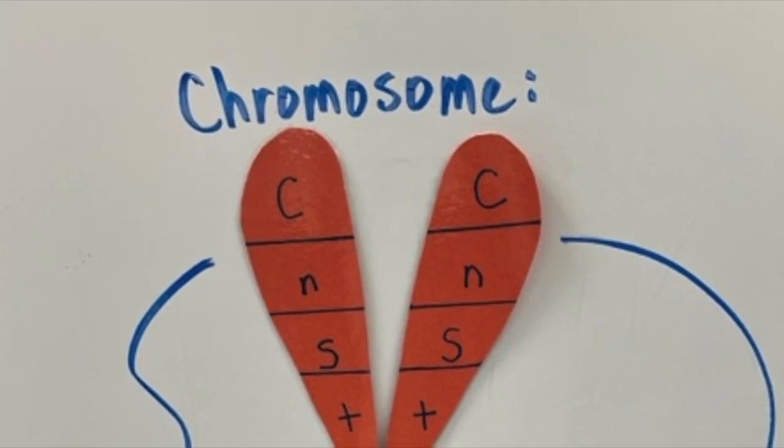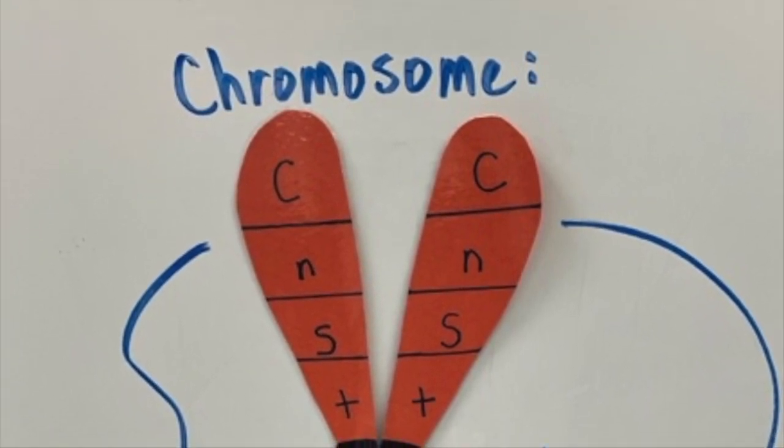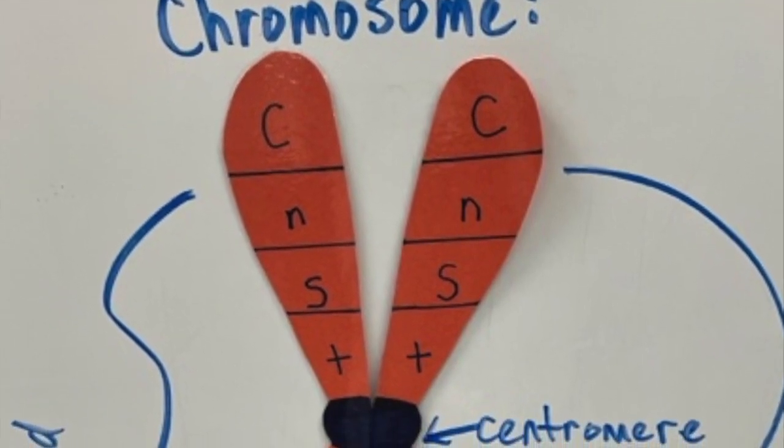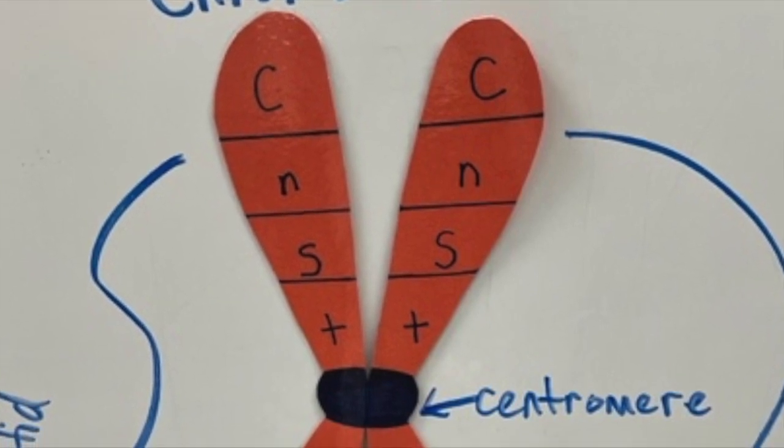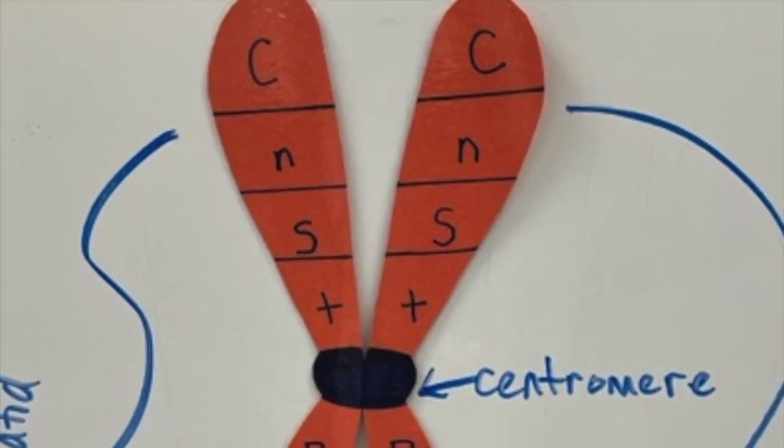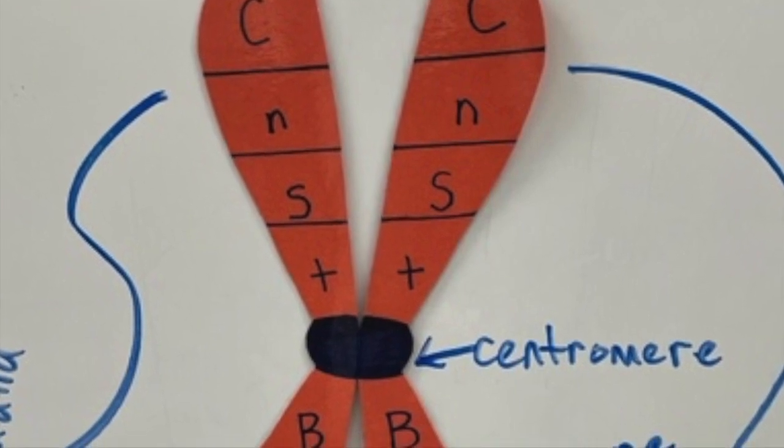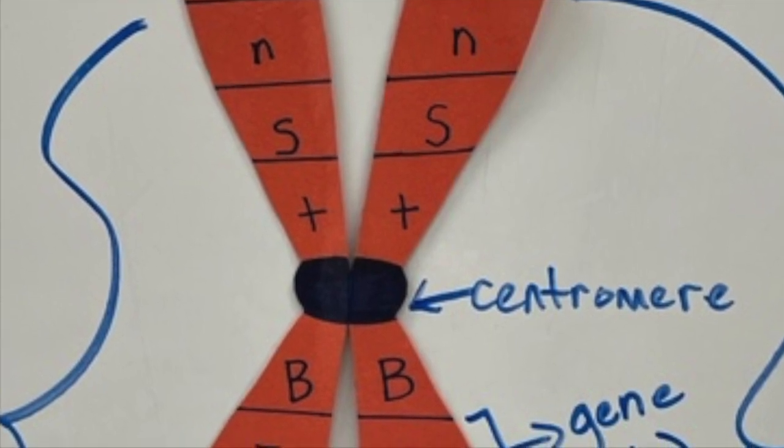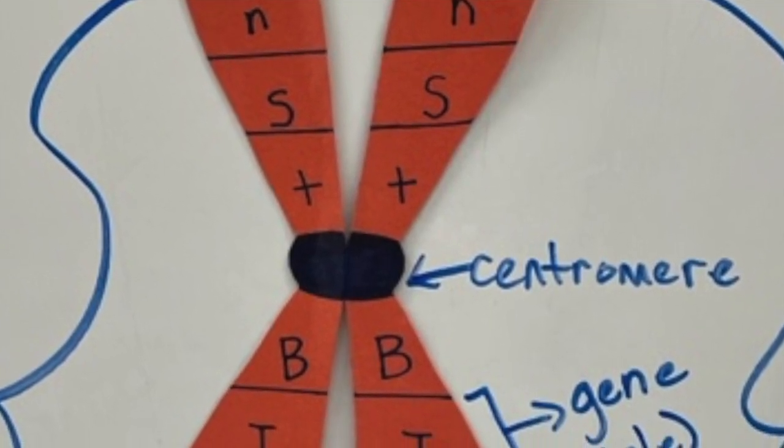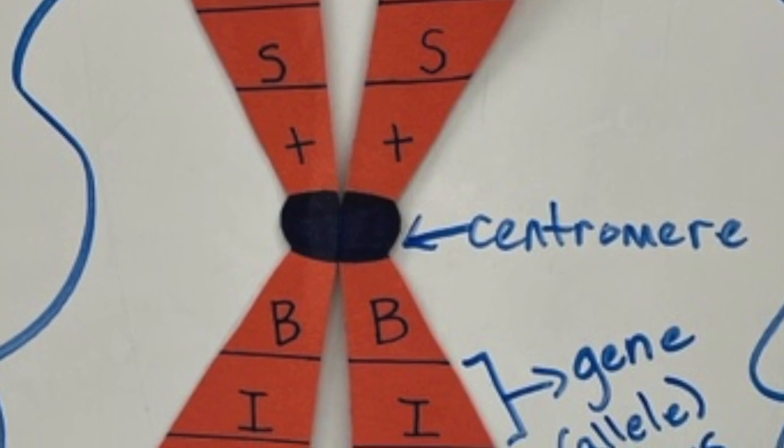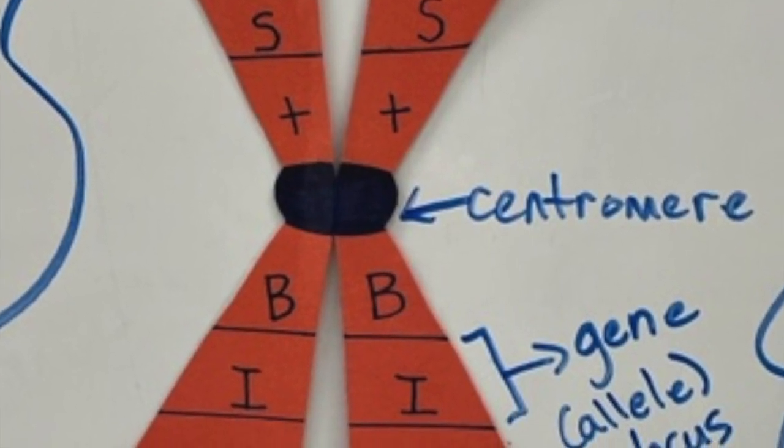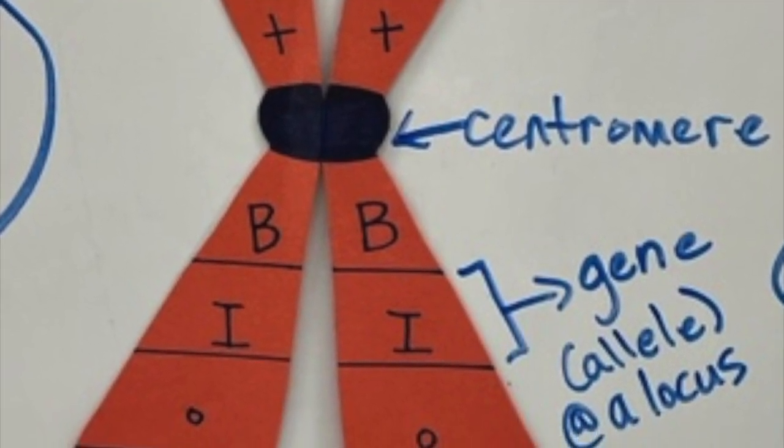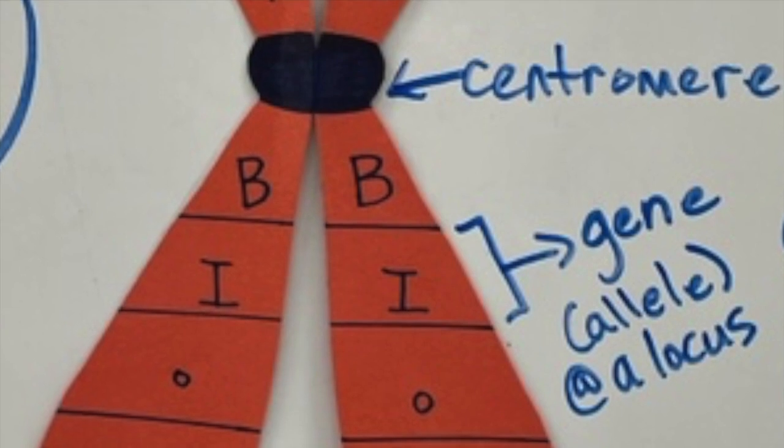Each of those segments, I put a letter. Each of those letters represents a gene. Well, I should say each location is a gene, meaning each of those little almost rectangle segments is a gene with a different allele in it. An allele is a form of a gene. So if you notice, some of them I've written capital letters, some of them I've written lowercase letters. That's to represent dominant and recessive alleles. The location where an allele is located is called its locus. So each of those almost rectangular segments on the chromosome has its own locus.